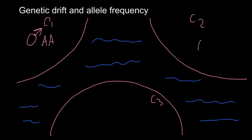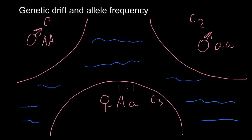In community two we have a male with genotype small a small a, or homozygous recessive. In community three we have a female with genotype capital A and small a. Community three has an allelic frequency ratio of one to one — one dominant allele and one recessive allele, or 50% to 50%.